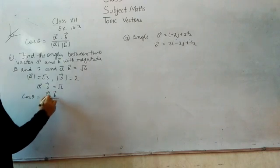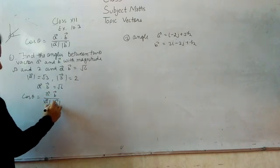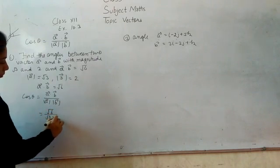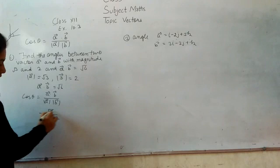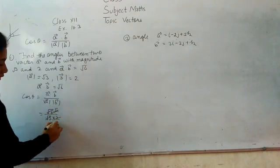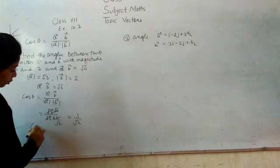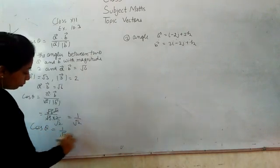a dot b upon magnitude of a times magnitude of b. This is root 6 and root 3 multiplied by root 2. This is cancelled by root 2 and this is cancelled by root 2. What is 1 by root 2? Cos theta is 1 by root 2.